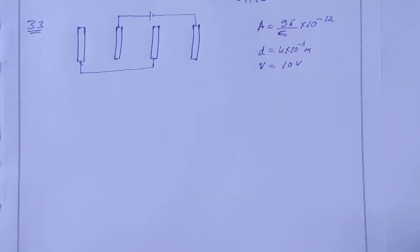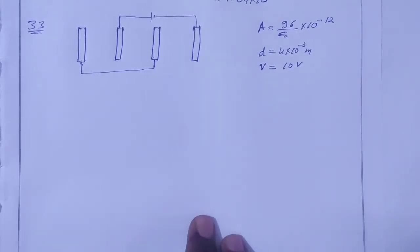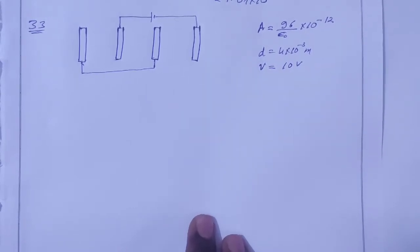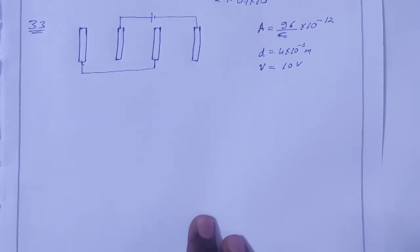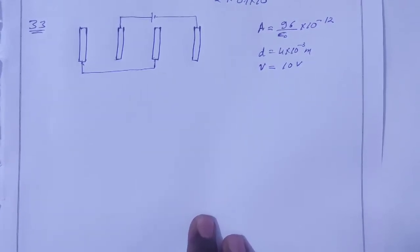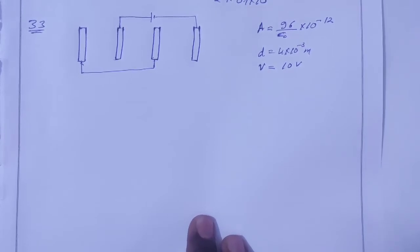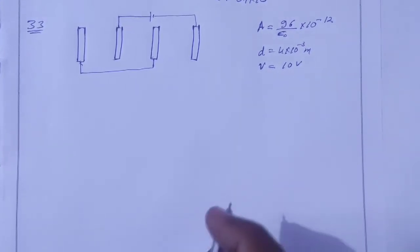SC Buma solution, chapter 31, capacitors, question number 33. Each of the plates shown in the figure has surface area 96 by epsilon naught into 10 to the power minus 12 on one side, and the separation between consecutive plates is 4 mm. The EMF of the battery connected is 10 volt. Find the magnitude of the charge supplied by the battery to each of the plates connected to it.